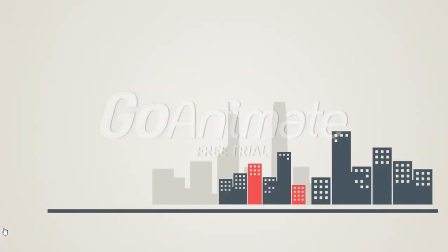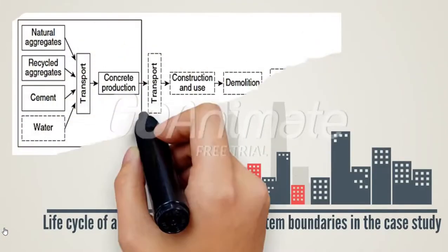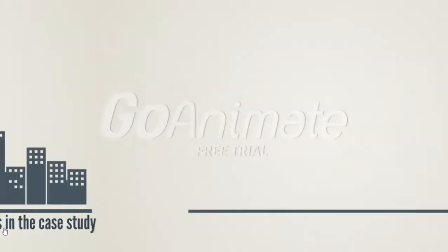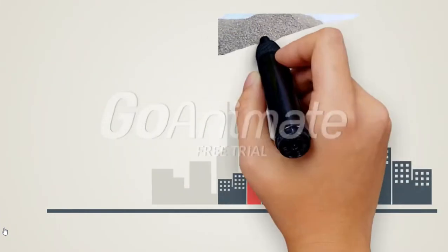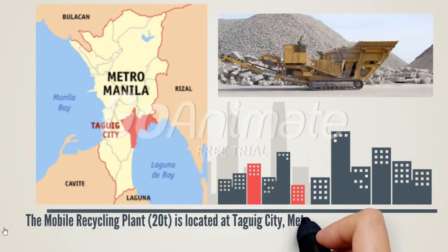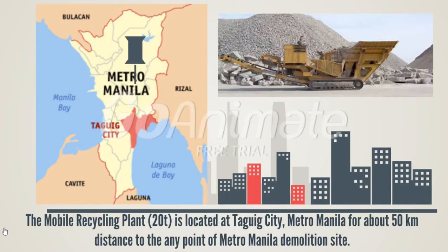The assessment focuses from the extraction and production of constituent materials up to the production of concrete. The mobile recycling plant, 20T, is located at Taguig City, Metro Manila, approximately 50 km distance to any point of Metro Manila demolition site.